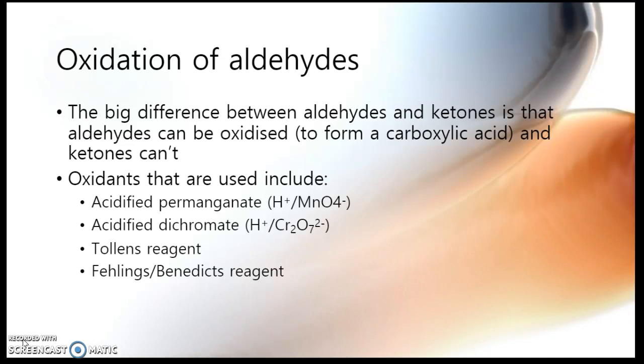Now, both of these reagents, Tollens and Fehlings, are transition metals. The metal gets reduced, and the aldehyde gets oxidised. But they are very weak oxidants, and so they will oxidise something that really wants to be oxidised, like an aldehyde. But they won't oxidise most things. So you wouldn't use it for oxidation of an alcohol or anything like that.